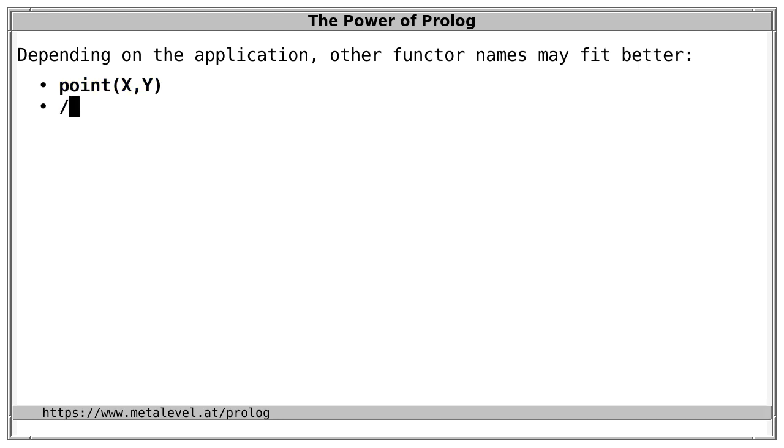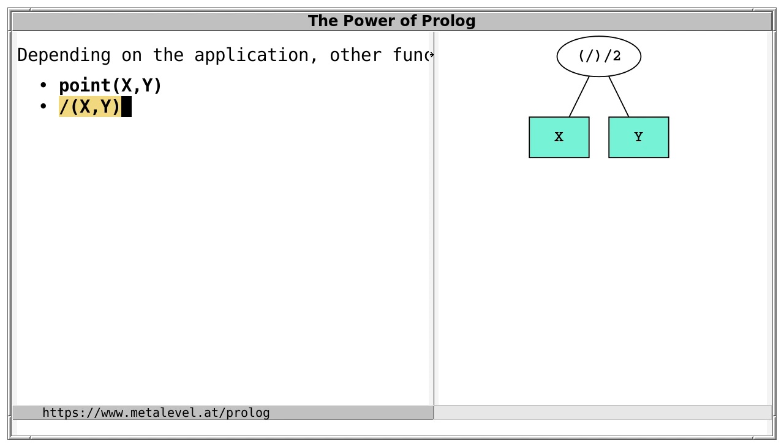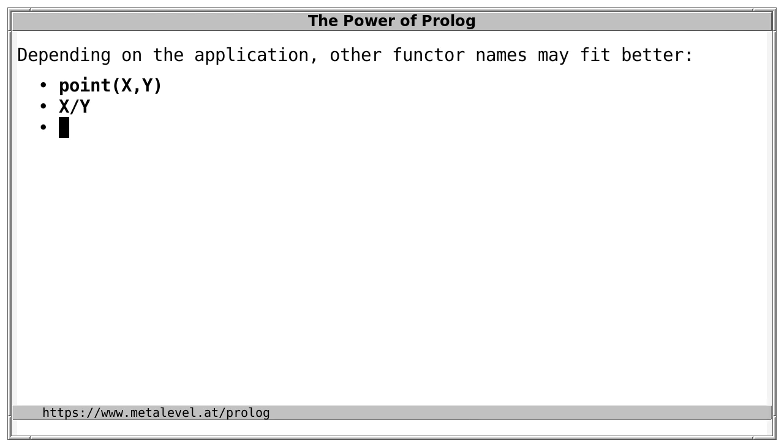As another example, slash of x and y could also make a lot of sense for coordinates. Since slash is also a predefined infix operator, we can also use operator notation for this term, just like for dash. As yet another example, equals of x and y could also be a good choice in some cases.